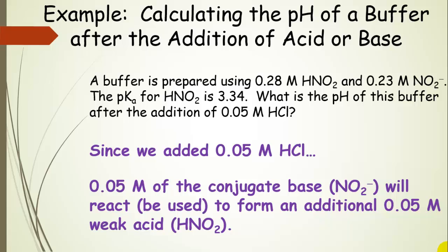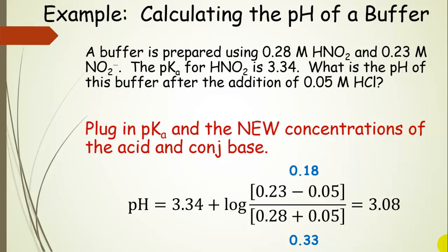Since we added 0.05 molar hydrochloric acid, then that means 0.05 molar of the conjugate base is going to be used up. It's going to react with that hydrochloric acid. It's going to accept that proton. And it's going to form an additional 0.05 molar of the weak acid nitrous acid. So we can show that in the Henderson-Hasselbalch equation by here's our base form. So we started with 0.23 molar and we used up 0.05 molar of it. So we get 0.18 molar. And in the denominator, we have 0.28. That was our initial. We gained an extra 0.05. And so that's going to give us 0.33.